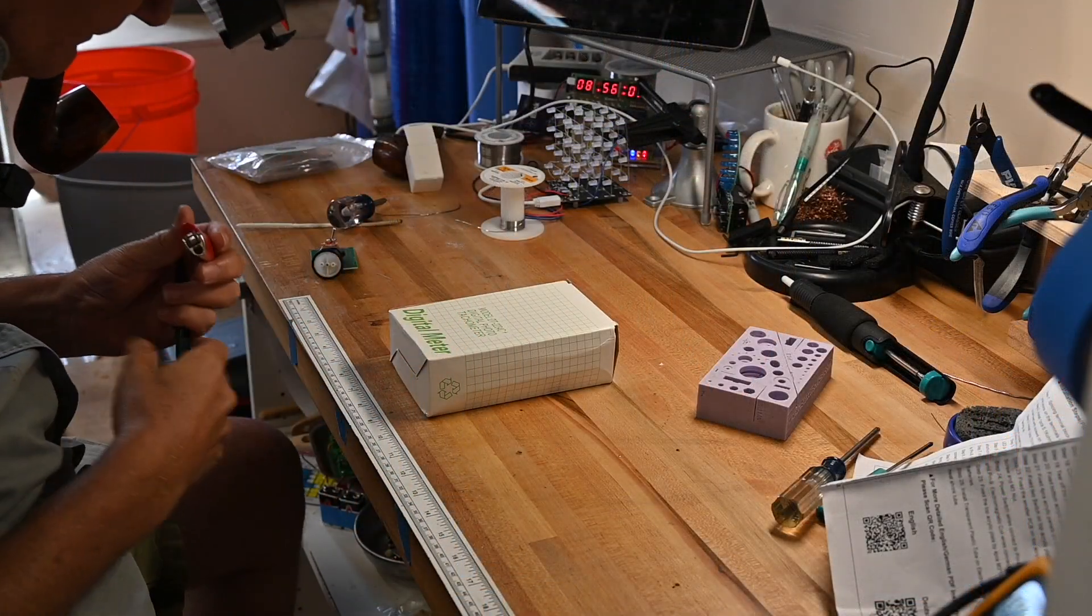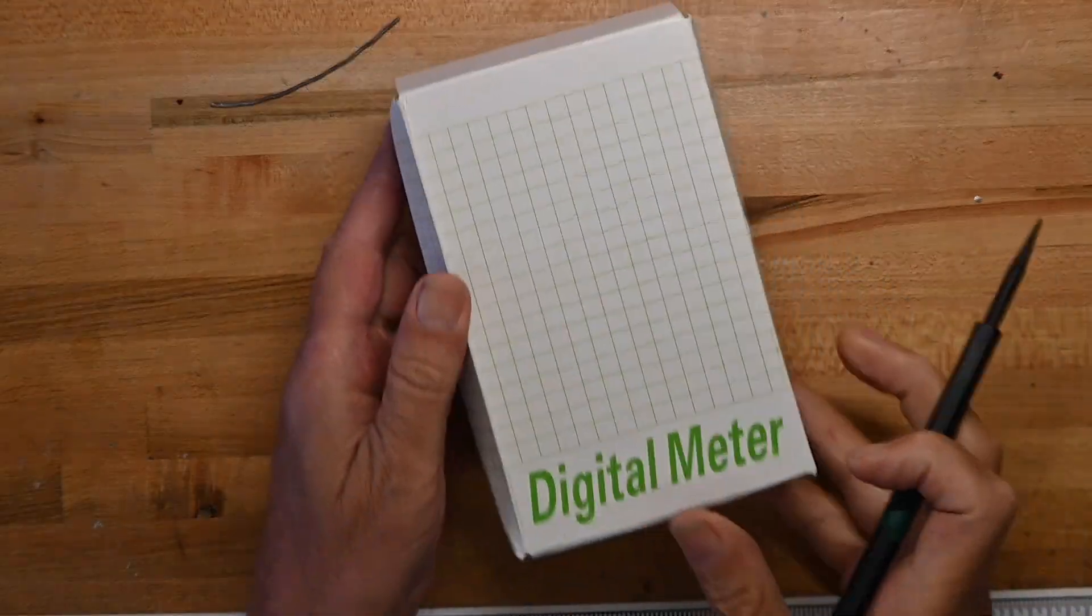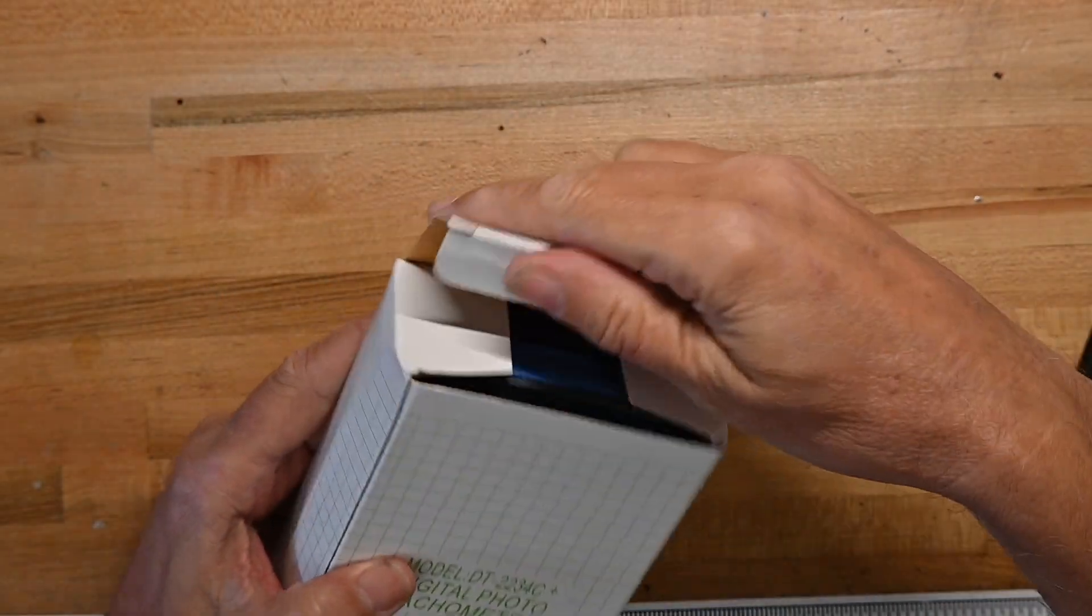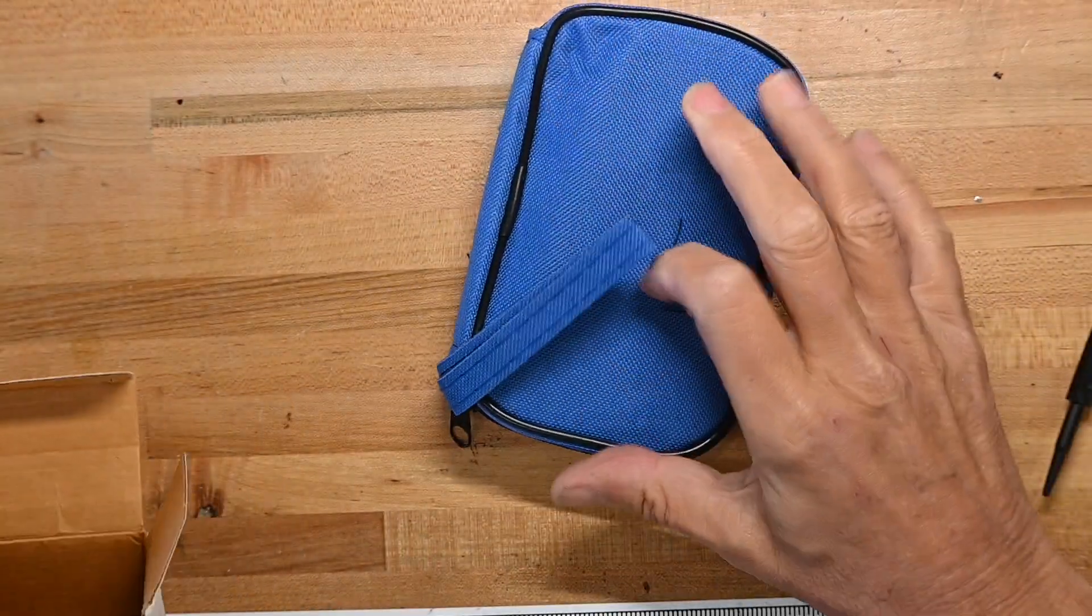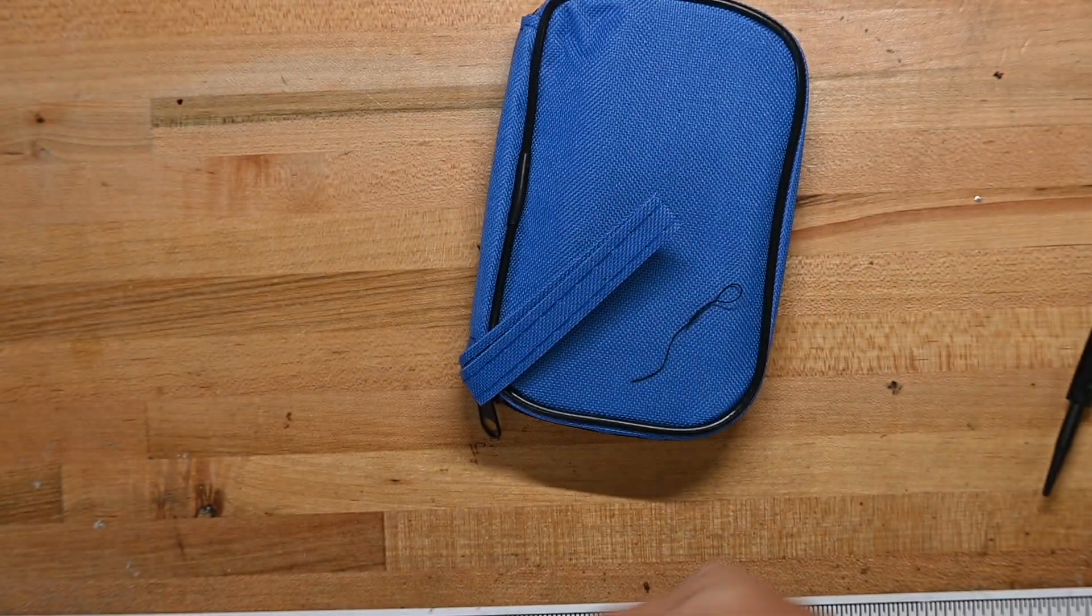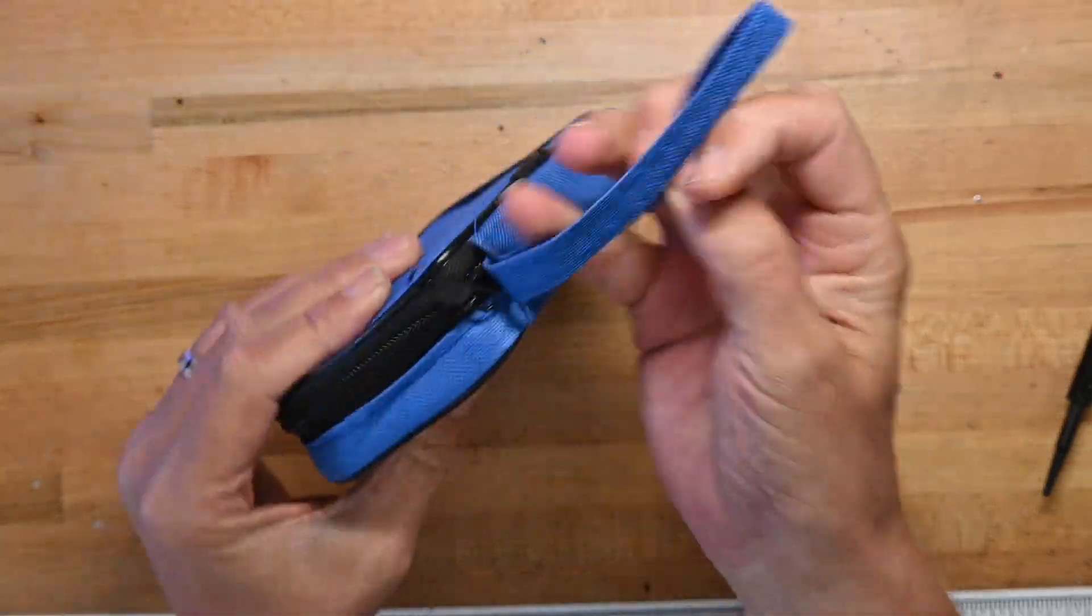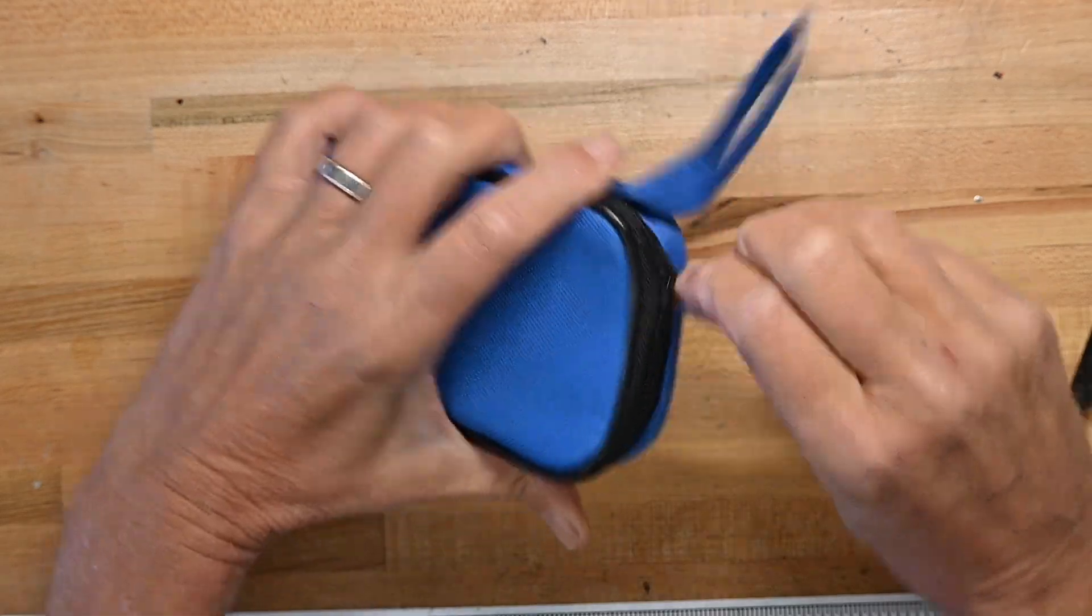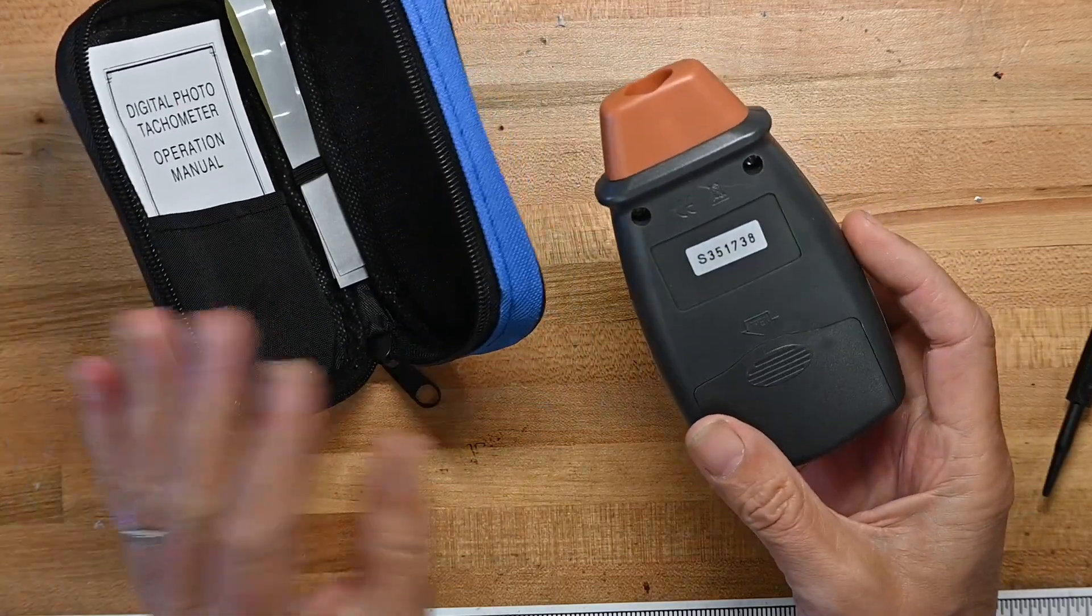Here's the box. Model number, digital photo tachometer, digital meter. Nothing else on the outside. Let's open it up. A little pouch. Get the box ready for recycling. Some loose thread, a little carry strap, and a zipper. This is really light. I must have to put some batteries in it.